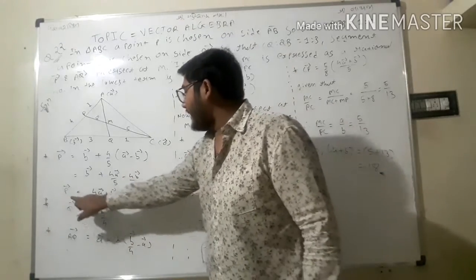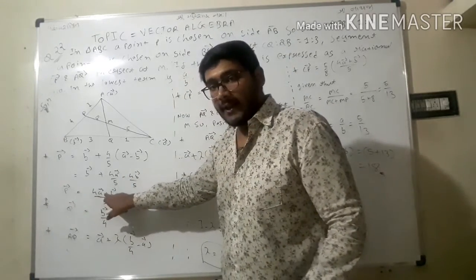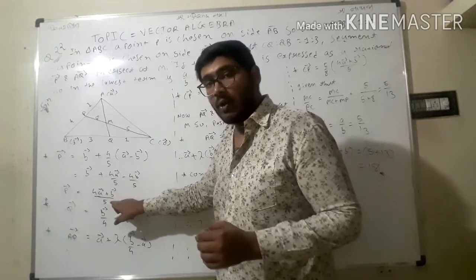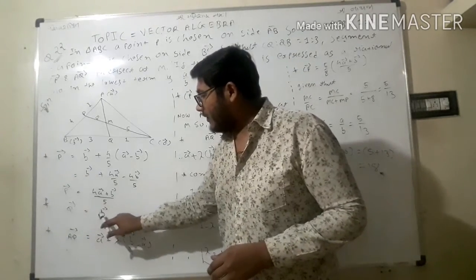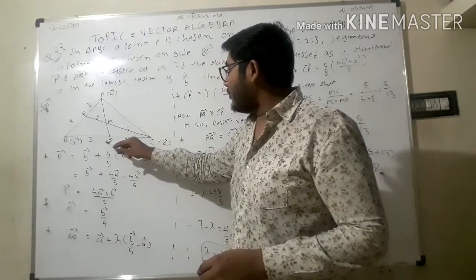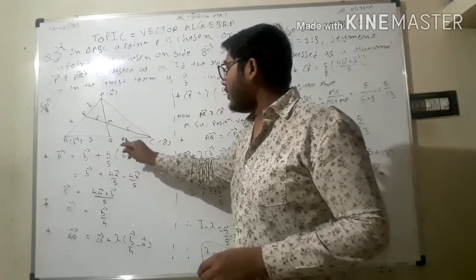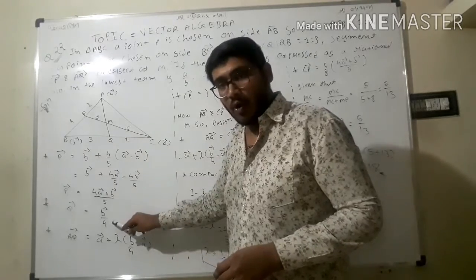Q vector equals b vector upon 3 plus 1, so Q vector equals b/4.